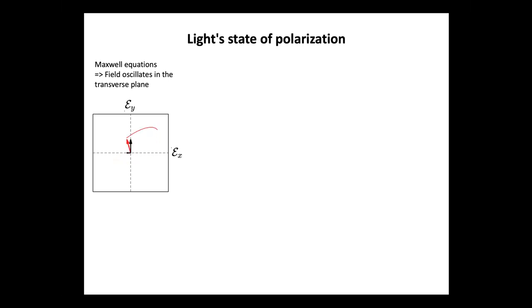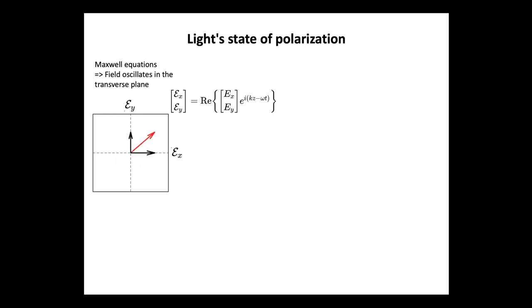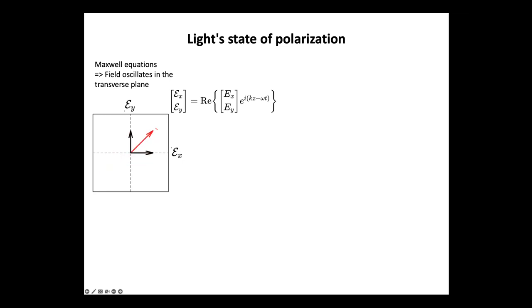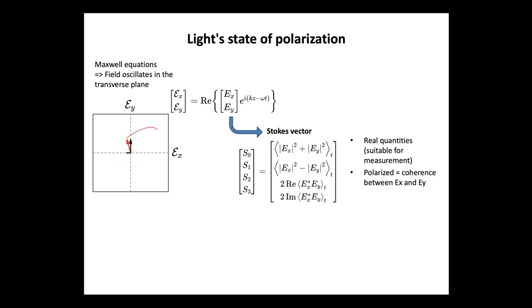This ellipse can be decomposed as the sum of an oscillation of the field in the x component, Ex, and the oscillation of the field at the same frequency along the other direction, Ey. A nice way to describe this is not with real quantities but to switch to complex amplitudes, where you have complex numbers and you separate the time dependence and the dependence along the propagation distance. Now that you have this state of polarization, there are different ways to represent and quantify it.